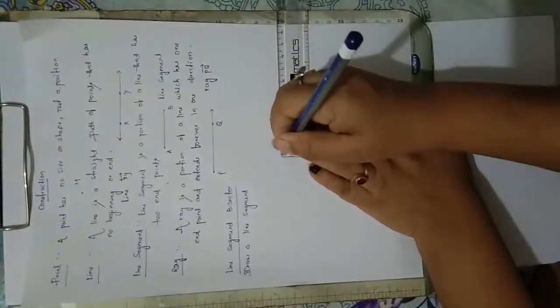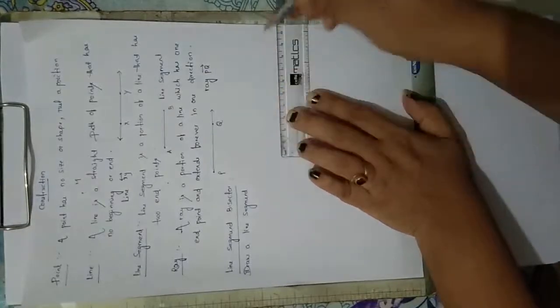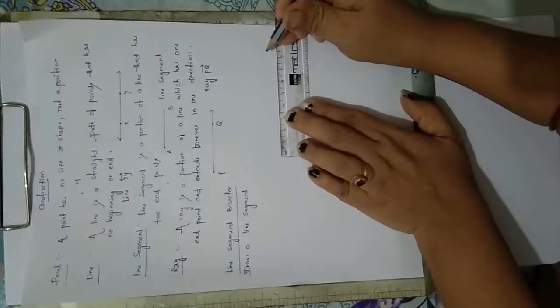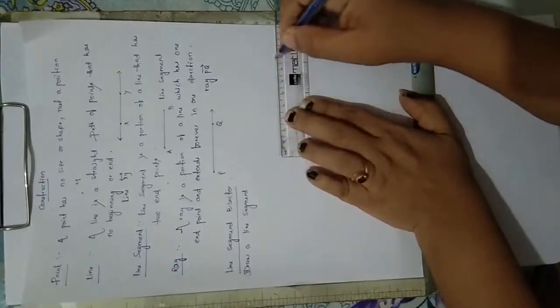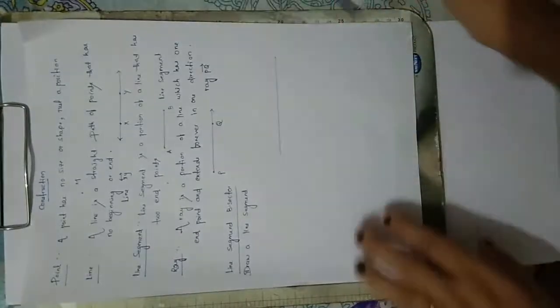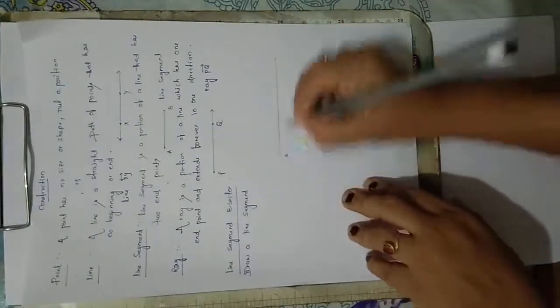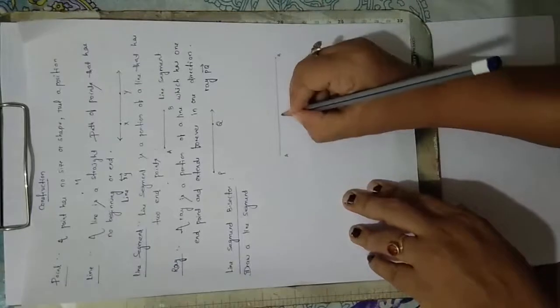For example, I will take points at 0 and at 8. This is nothing but an 8 centimeter length line, named as A and B. This is 8 centimeters.